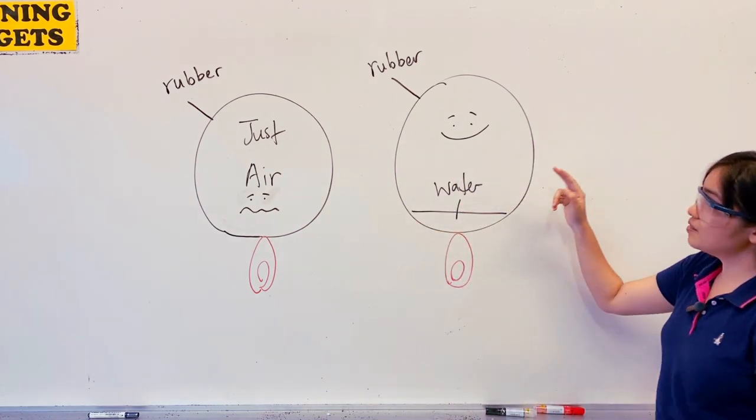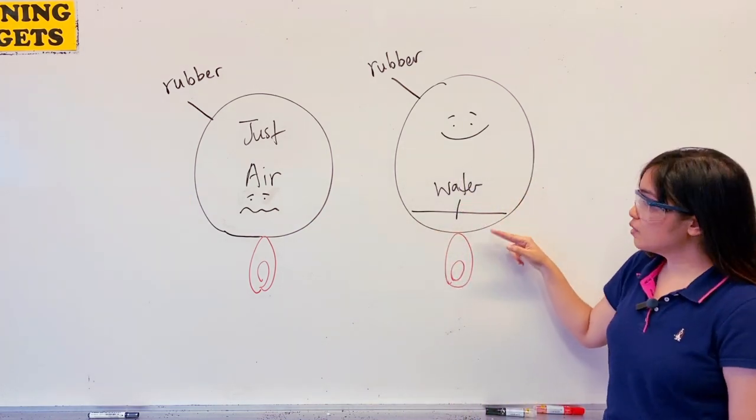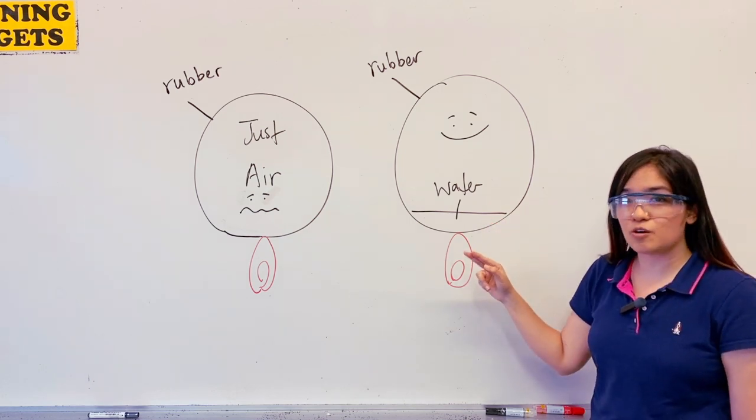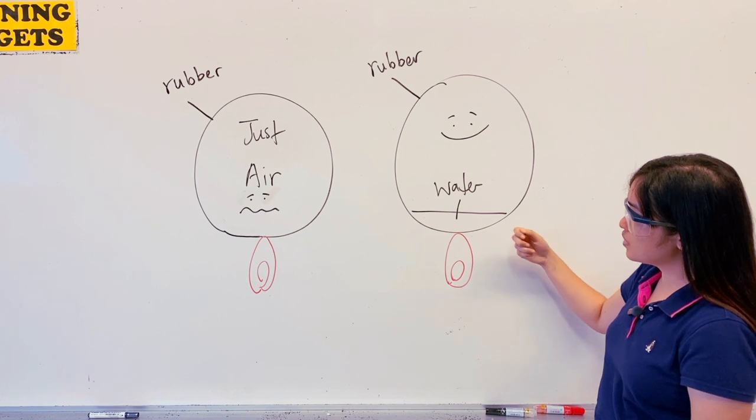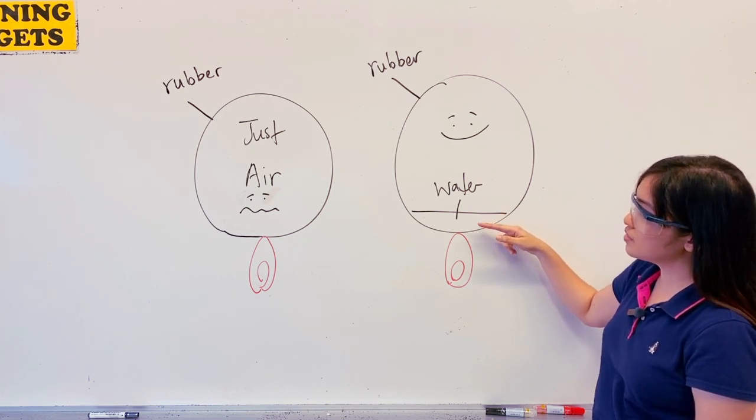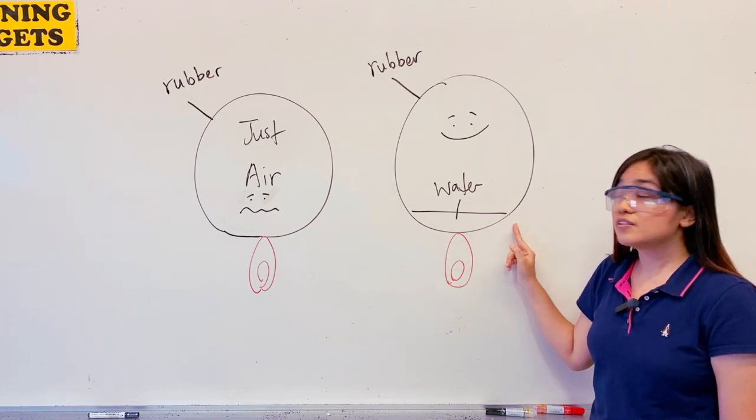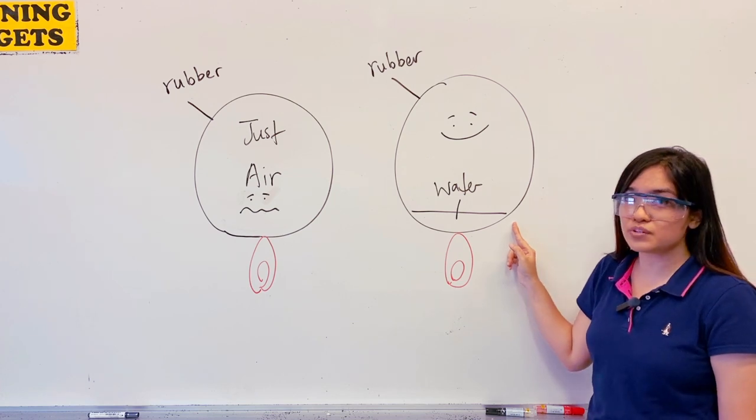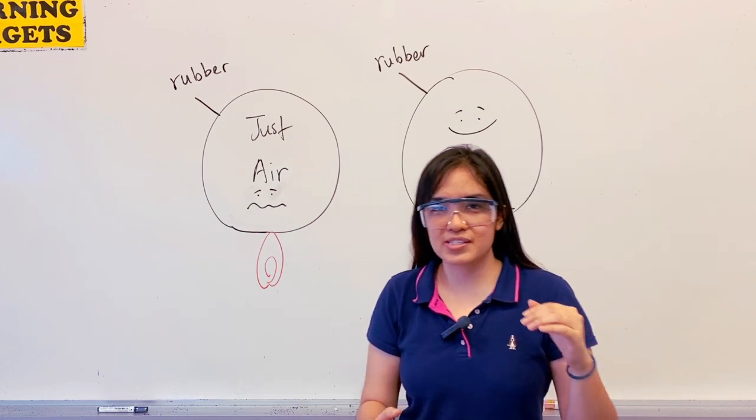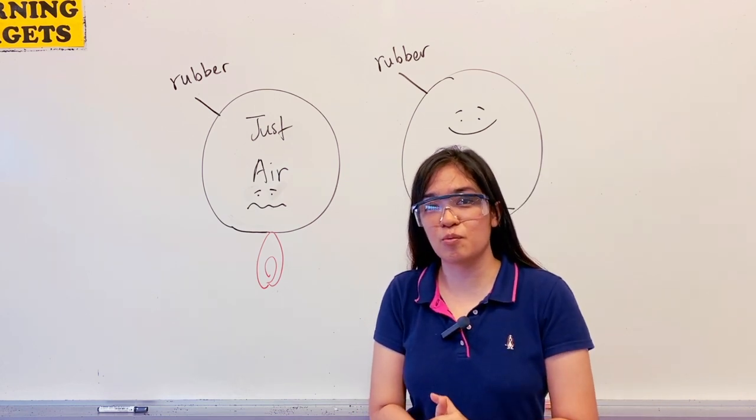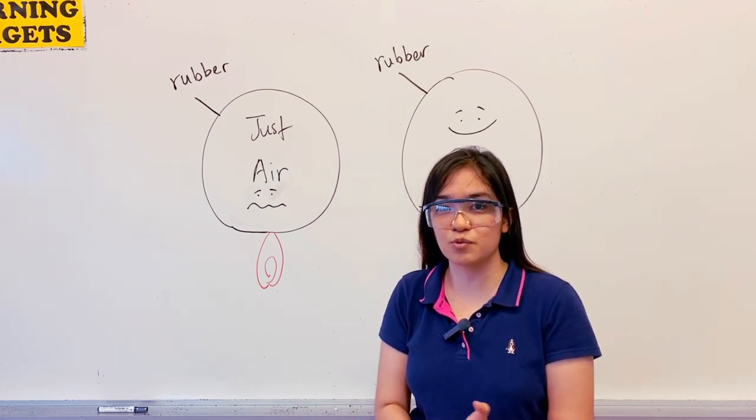The second balloon was filled with water and water is much better compared to air at collecting heat. And so the water was able to reduce the heat gained by the rubber for the second balloon. And so the balloon was able to withstand a high temperature.